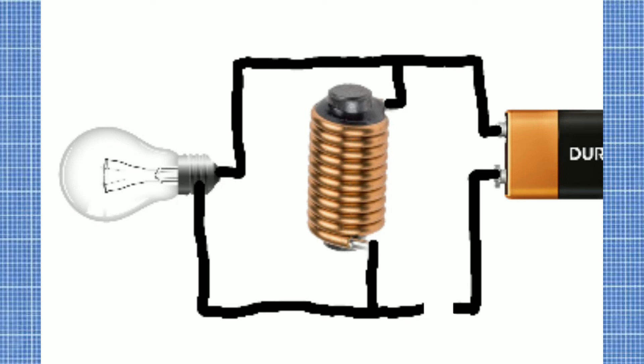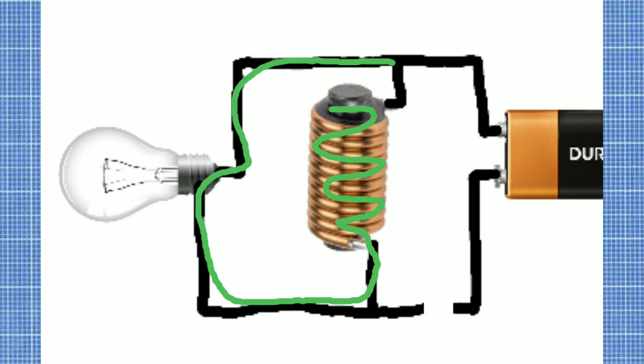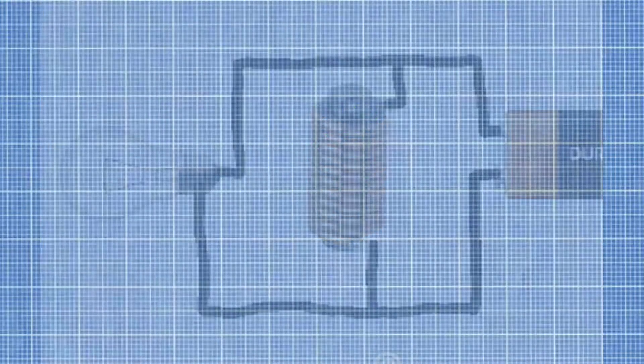Now, when we disconnect the power supply, the inductor continues pushing the electrons around the loop until the lamp dissipates all the energy.